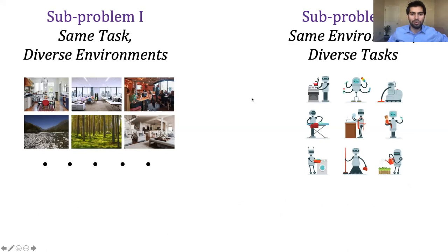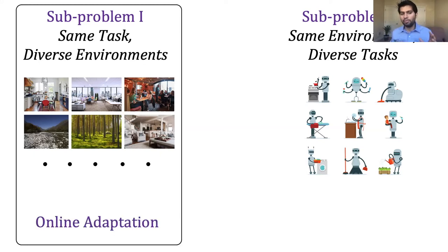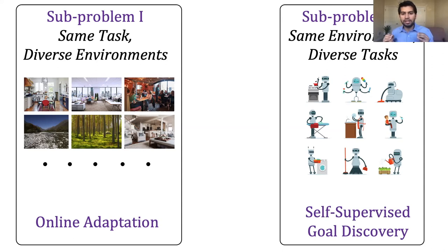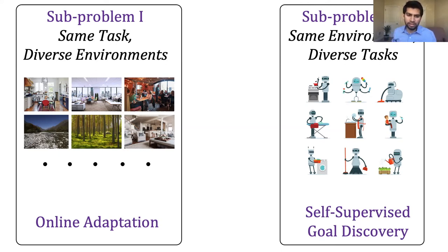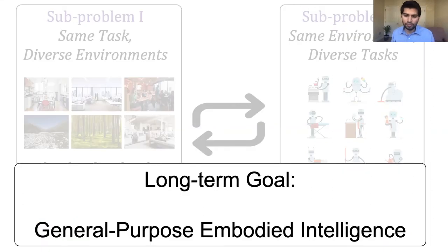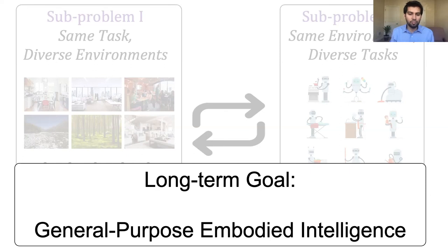To summarize the talk: in sub-problem one, we discussed online adaptation to diverse environments within the same task. Then we discussed self-supervised goal discovery where the agent discovers many tasks on its own within the same environment. To achieve the long-term goal of general purpose embodied intelligence, we need the interaction between both. But this is not enough — we also need efficiency, as robots must interact across multiple environments and tasks practically.